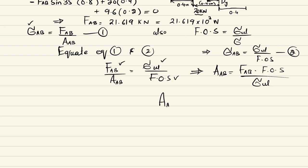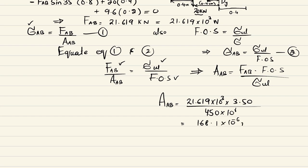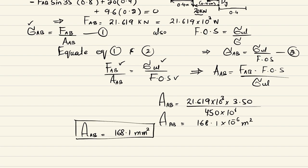Substituting values: A_AB = (21.619 × 10³ × 3.50) / (450 × 10⁶) = 168.1 × 10⁻⁶ square meters. Converting to millimeters, the cross-sectional area of member AB is 168.1 square millimeters. This is the answer to problem 1.41.